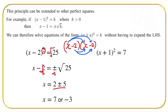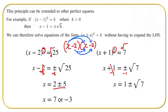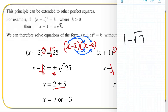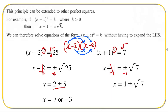We have x plus one all squared is equal to seven. We don't need to expand using the square; instead we use the square root on the right hand side. So we get x plus one is equal to plus or minus the square root of seven. Then subtracting one from both sides, x is equal to negative one plus or minus the square root of seven. One plus the square root of seven gives a solution of approximately 3.64, or one minus the square root of seven gives approximately negative 1.64575. So those are the two solutions.